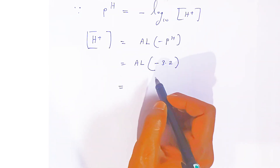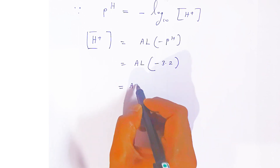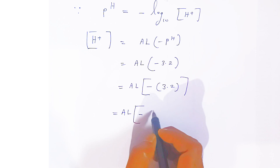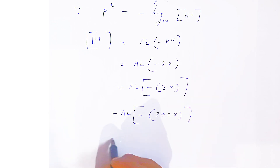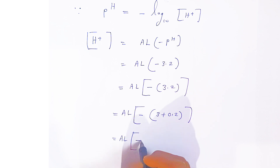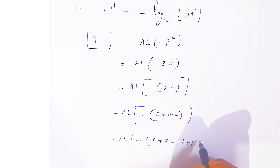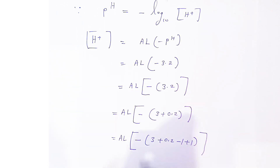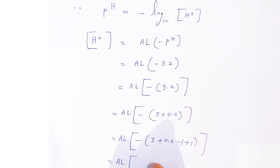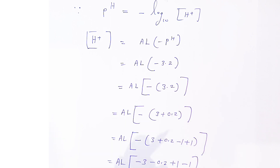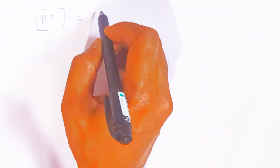Taking the antilog of −3.2: we rewrite −3.2 as −(3 + 0.2). Then we add and subtract 1, so it becomes −3 − 0.2 + 1 − 1. The minus goes inside, giving us the antilog of (−3 − 0.2 + 1 − 1), which simplifies step by step.